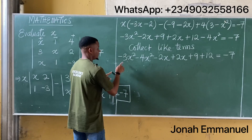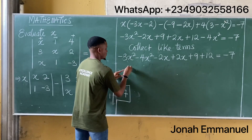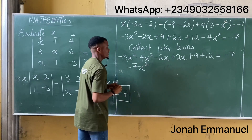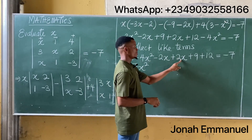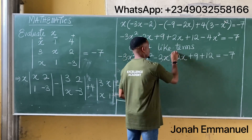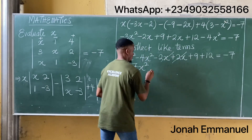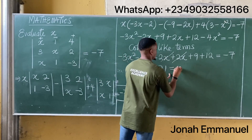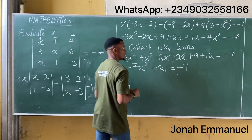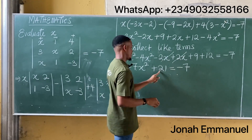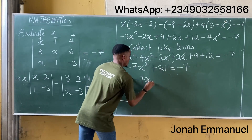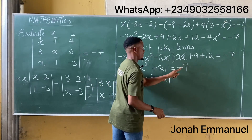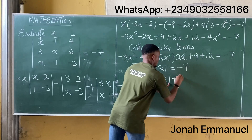So from here: minus 3x squared minus 4x squared gives minus 7x squared. Minus 2x plus 2x gives 0, so the x terms cancel. 9 plus 12 gives plus 21, equal to minus 7. Moving minus 7 to the left side it becomes plus 7, giving minus 7x squared plus 21 plus 7 equals 0, so minus 7x squared plus 28 equals 0.